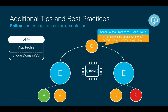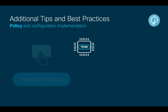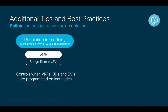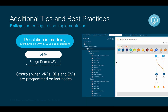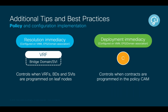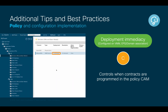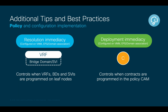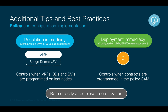ACI determines where and how to program both logical network elements and policies based on its resolution and deployment immediacy settings. Resolution immediacy controls where VRFs, bridge domains, and SBIs should be deployed, and it is configured when associating a VMM domain to an EPG. Keep in mind resolution immediacy has no effect on physical domains, as they will always be resolved immediately. Deployment immediacy controls when contracts should be programmed in the policy CAM, and is commonly configured along resolution immediacy for VMM domains and at the static port level for physical domains.